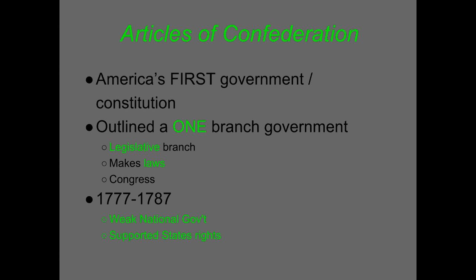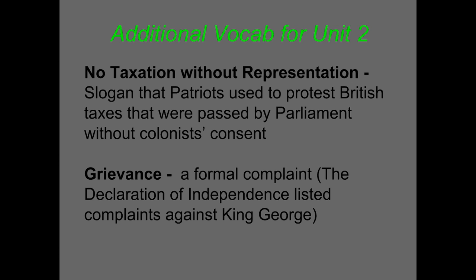That new government is going to be the Articles of Confederation — a one-branch government that they create in the years to come. It will outline one legislative branch that can make laws, a Congress — a group of people elected to make those laws. It's going to be short-lived, supporting states' rights, having a weak national government, and eventually not be successful.